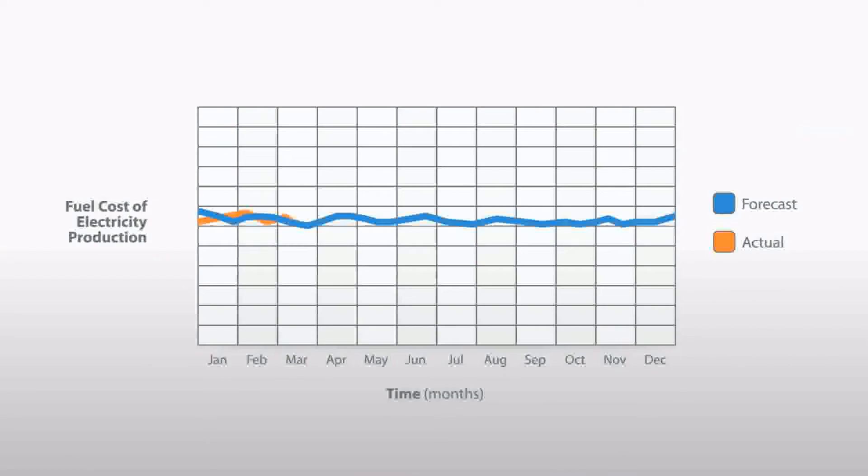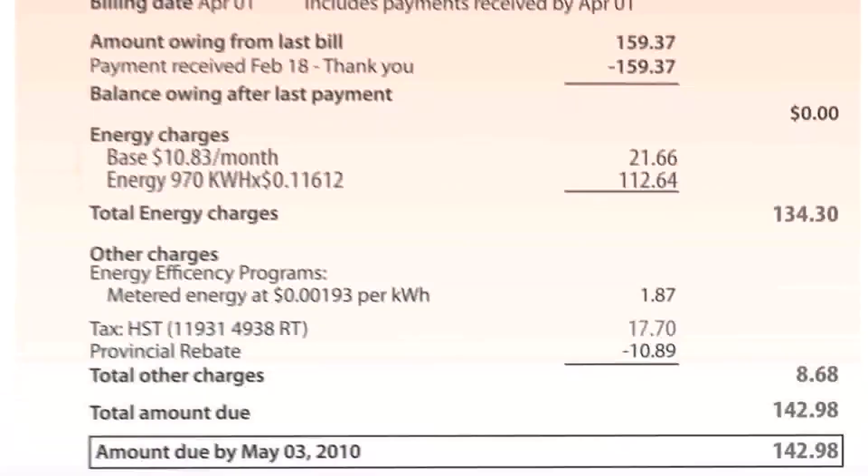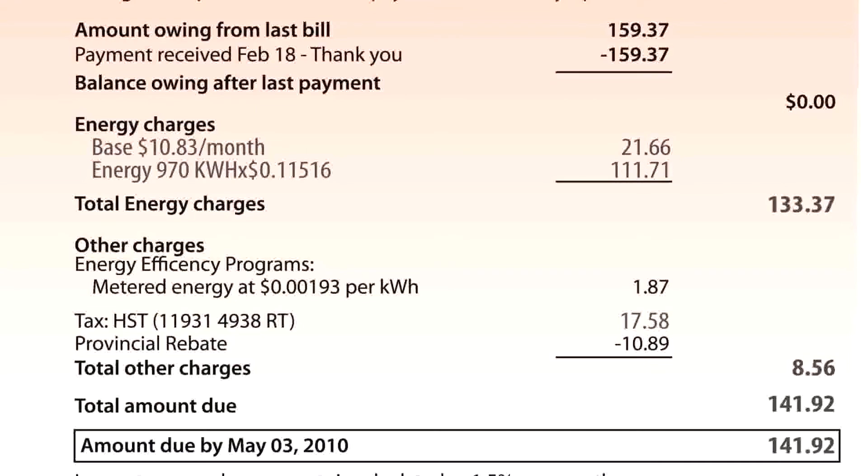At year's end, we tally up the actual fuel costs of producing power for the year. Then we use these actual numbers to calculate a new energy rate for the coming year. Your rate may go down, or it may go up.